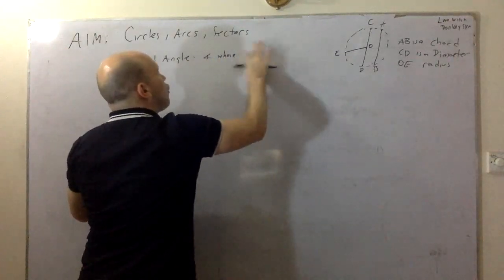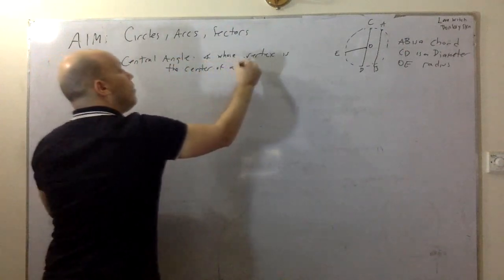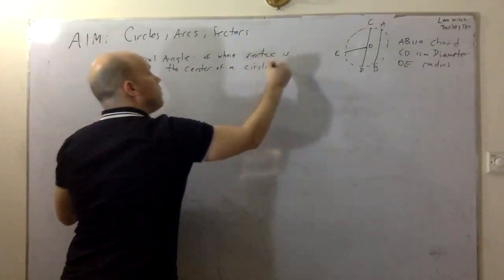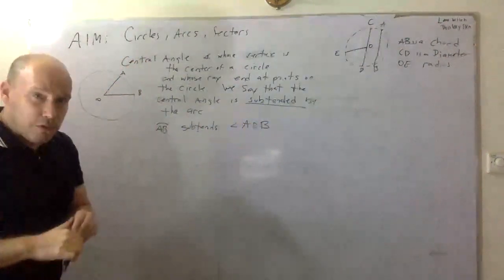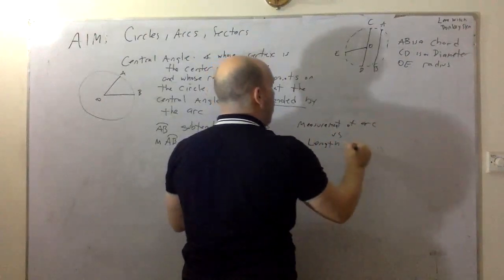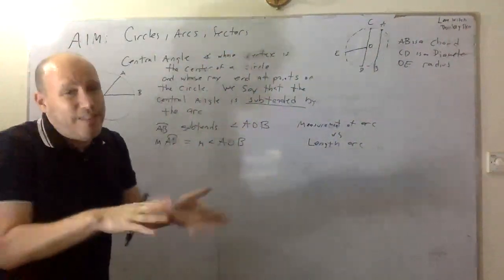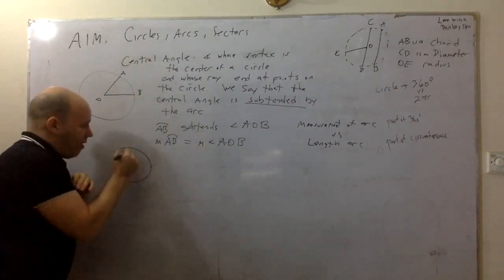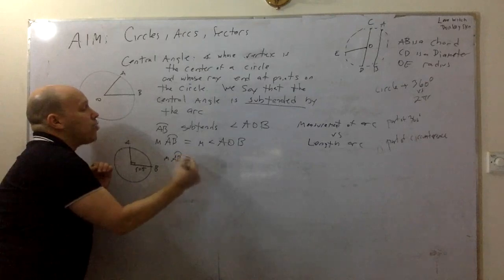A chord is a segment whose endpoints are on the circle. So we have point A and point B, and this segment is a chord — AB is a chord.